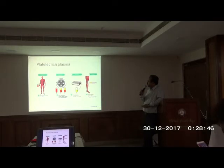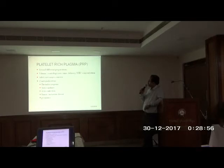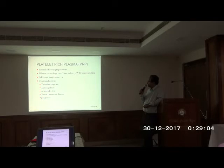The harvesting of PRP is very simple — we take the peripheral blood, spin it for 10 minutes, and get the PRP injection to give into the joint. There are several preparations which vary in volume, rate of delivery, and platelet concentration. Safety is not a major concern. A few contraindications include thrombocytopenia, anticoagulant use, active infection, tumour, and pregnancy.